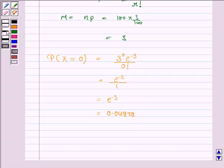Hence, the probability that in a sample of 100 bulbs no bulb is defective is 0.04979.